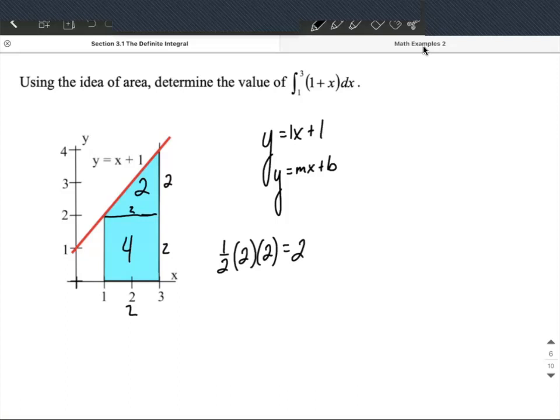Okay, so our integral from 1 to 3 of 1 plus x dx is just going to be 4 plus 2. Add those together, make 6.